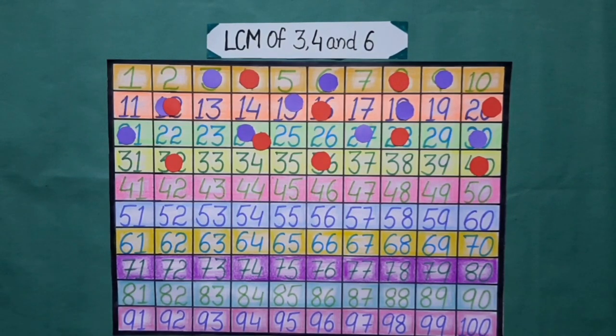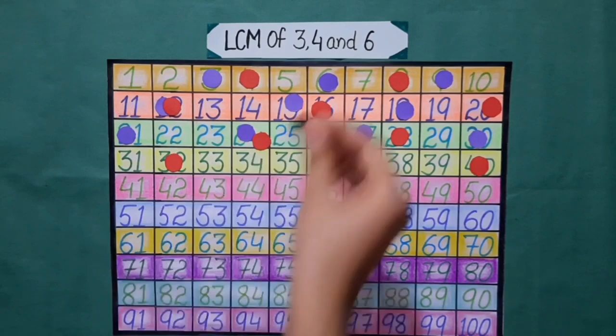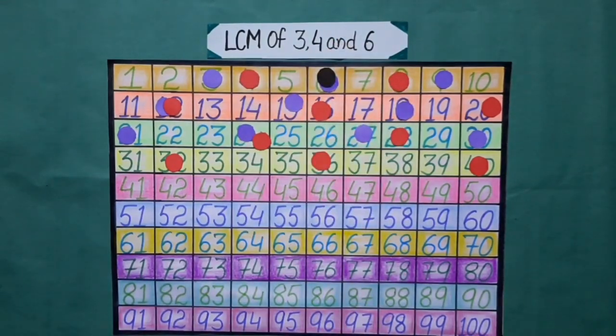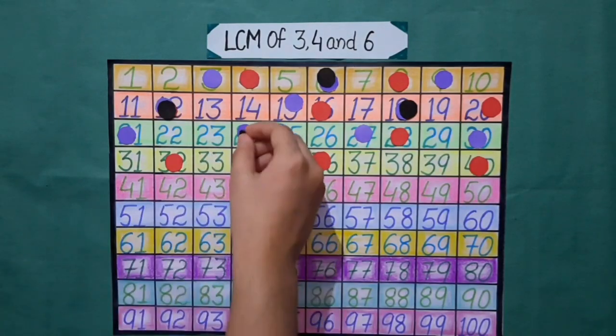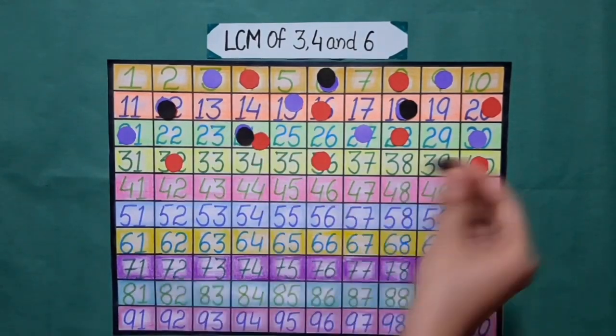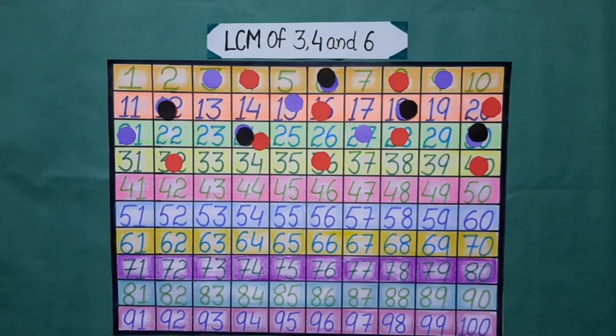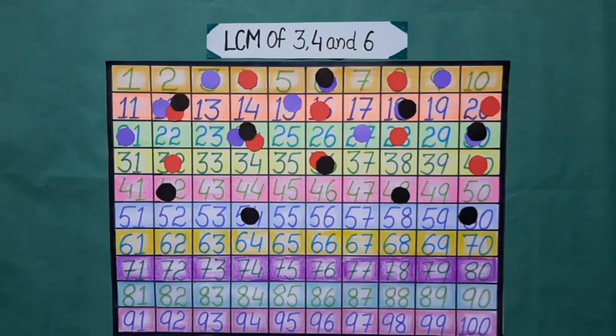Now, while reciting the table of 6, we will put black bindis on the multiples of 6. 6 ones are 6, 6 twos are 12, 6 threes are 18, 6 fours are 24, 6 fives are 30, 6 sixes are 36, 6 sevens are 42, 6 eights are 48, 6 nines are 54, 6 tens are 60.